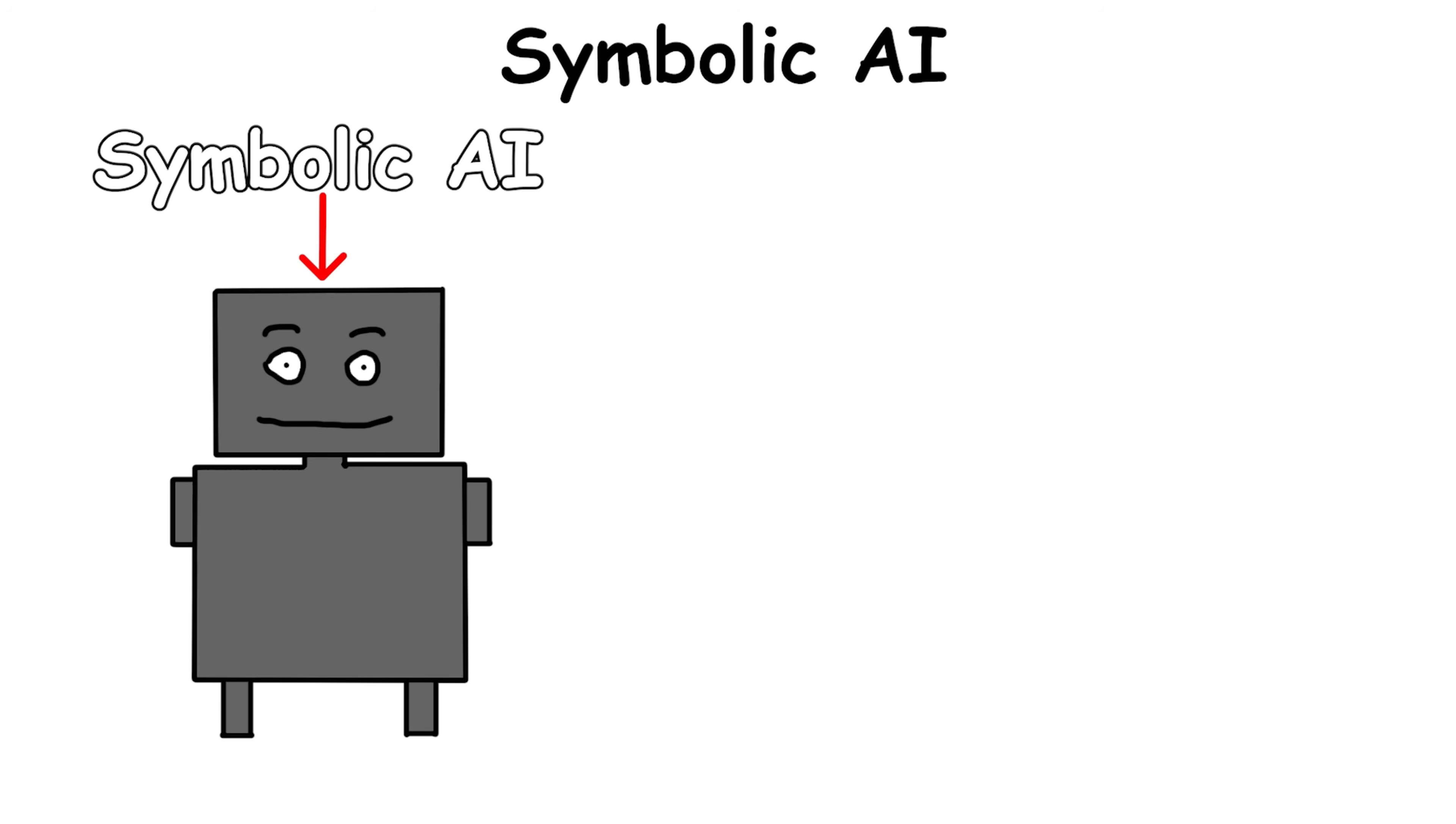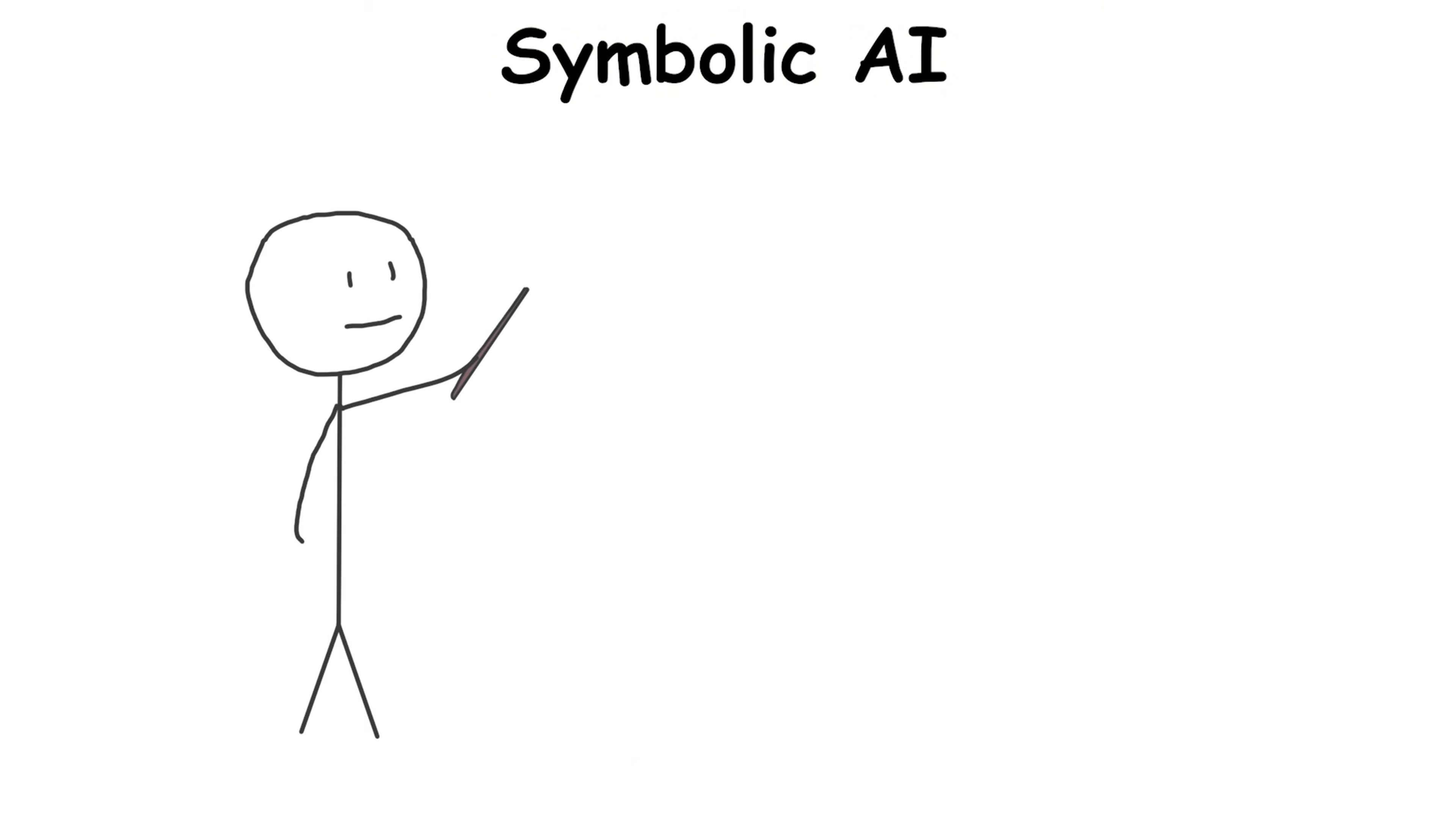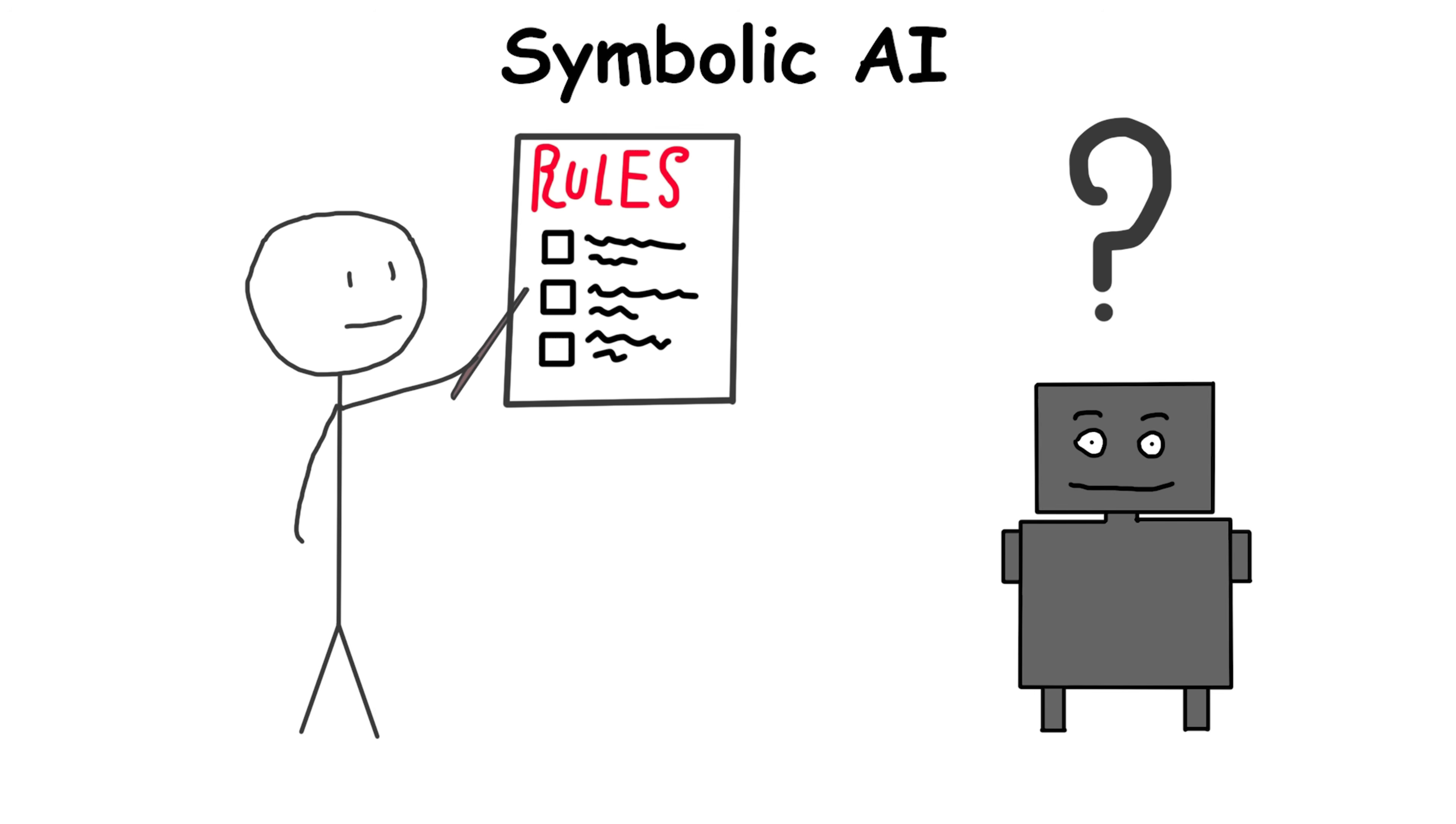Symbolic AI was like a lightning-fast clerk, excellent with clear rules, but clueless if something went off script.